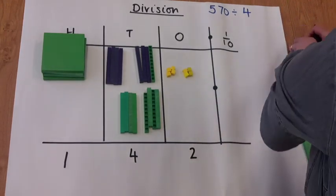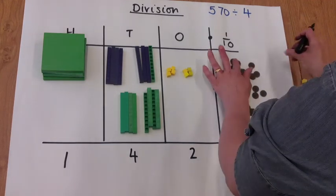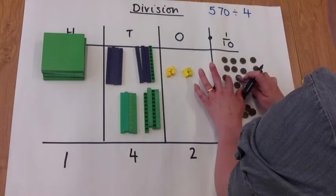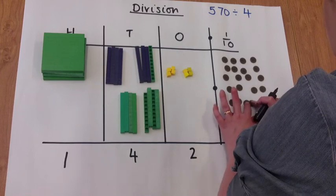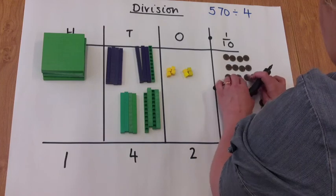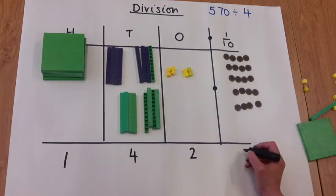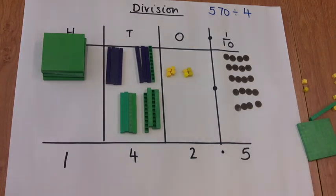Now we're going to use tenths place value counters now. Each one of those counters represents 1 tenth. Now if we regroup our two ones into tenths we've got 20 tenths. And that makes 5 groups of 4. So we've got 142.5.